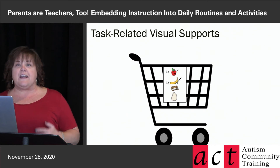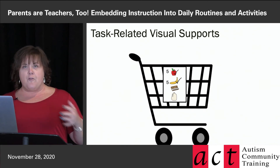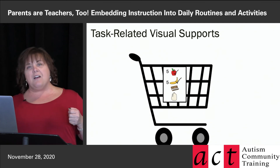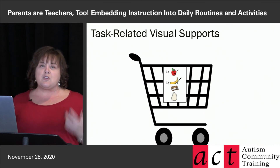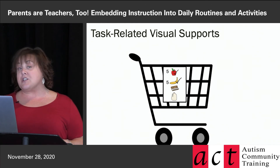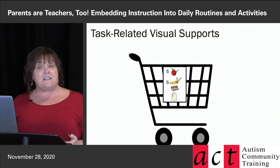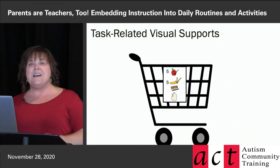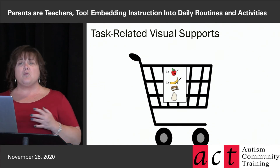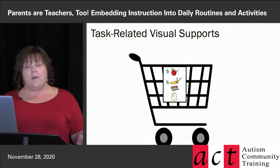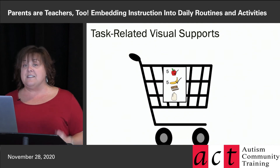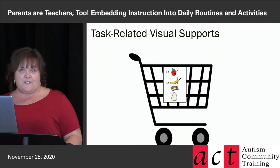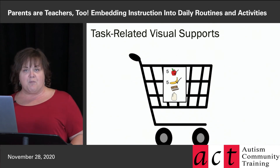There are lots of different ways to inform, but informing is really where we want to start. We want to make sure that whether it's a child, a youth, or an adult we're trying to teach, we're giving them clear information about what the expectations are, what we want them to do, how we want them to do it, and how they'll know that it's over. Think about what your individual child needs in terms of information in order to be successful, and that's the information you want to provide.